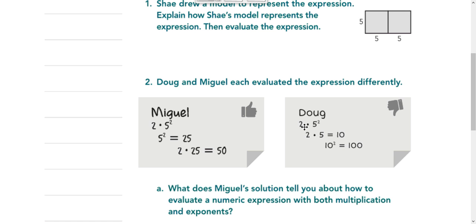With Doug, it looks like he multiplied 2 times 5 first. And he did it correctly, 2 times 5 would be 10, but it doesn't want us to multiply first. It wants us to do the exponents first. And the other way to know that is the order of operations.